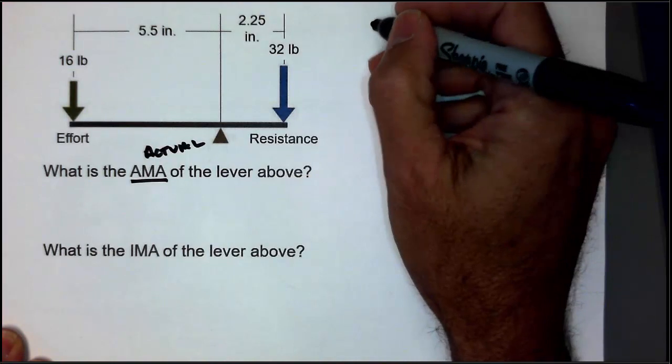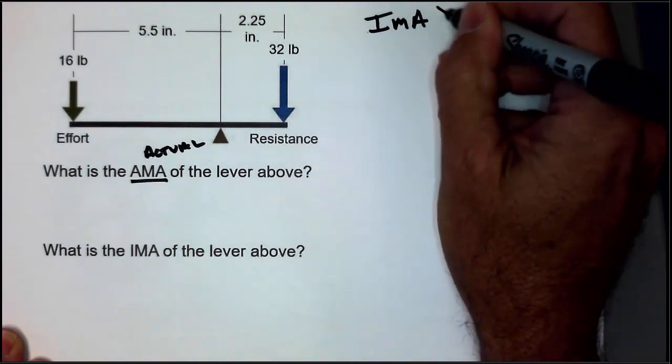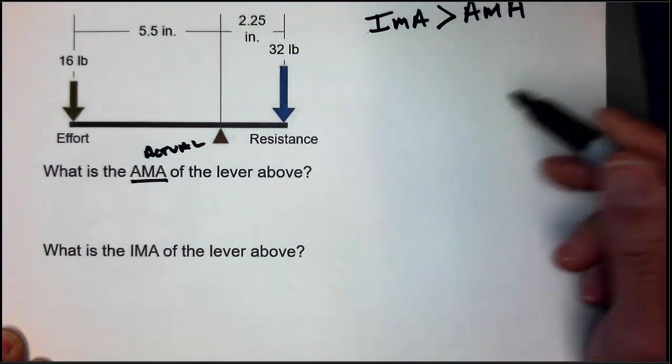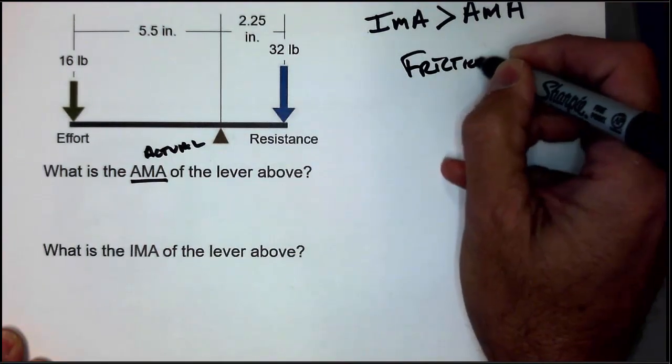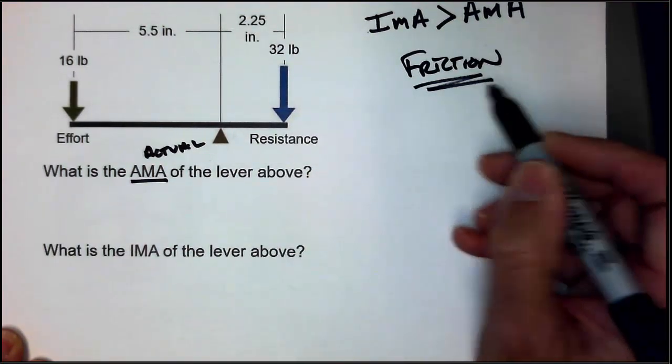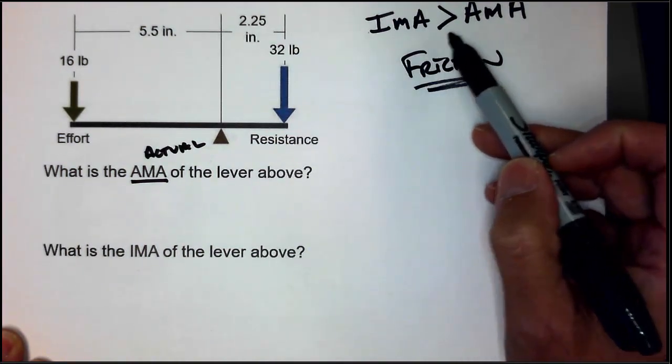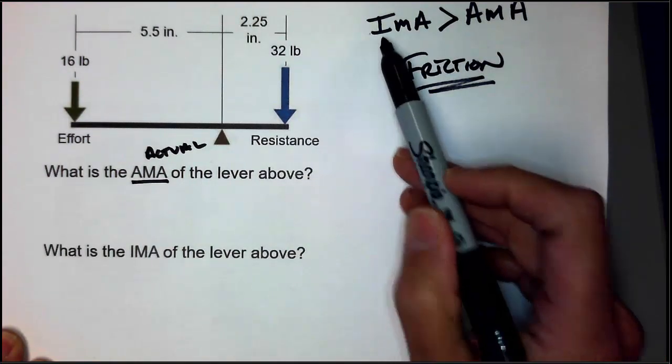And just so you know, ideal mechanical advantage is always greater than actual mechanical advantage because of many reasons. But the biggest reason is because of friction. There are always going to be other forces in our system that make IMA always greater than the actual mechanical advantage. We'll never really achieve this and get 100%.